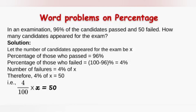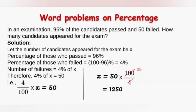So 4 by 100 into x is equal to 50, which gives x is equal to 50 into 100 by 4. Cancelling 4 and 100, we get 25 into 50, which is 1250. So the number of candidates who appeared is 1250. Let us see some more word problems in my next video.